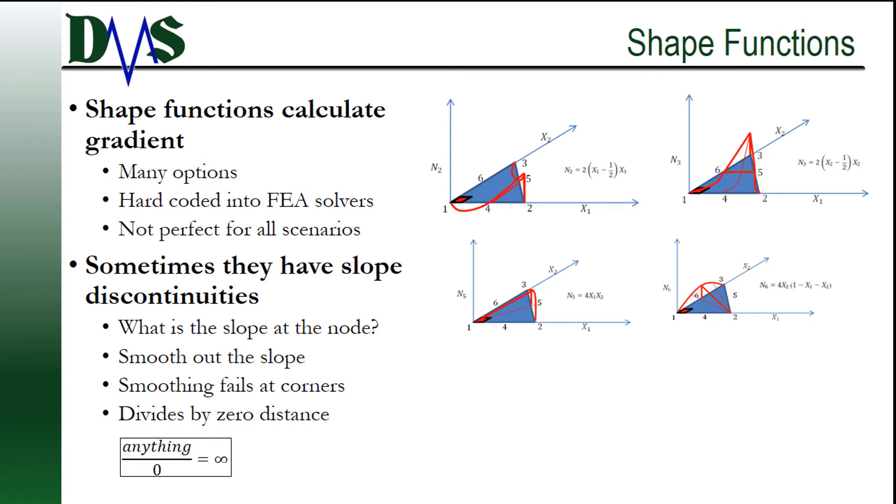Within every FEA element we have a set of generalized math functions to describe how the stresses and deflections vary from one node to the next. These are called shape functions and they are a whole science of their own with lots of options. They're at the heart of every FEA code and they're not easily changed from one scenario to the next. Unfortunately, there's no perfect shape function that works for everything, so the software developers typically are going to pick a shape function that works for most of the applicable scenarios.